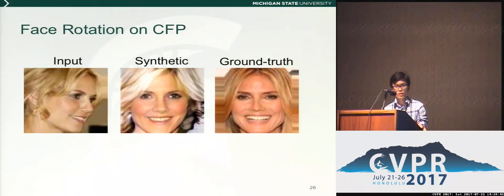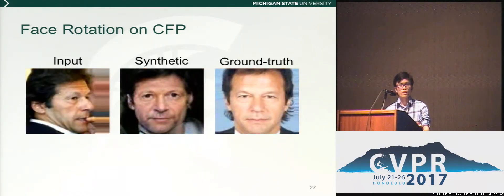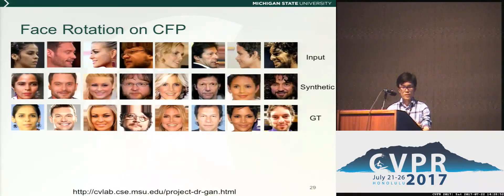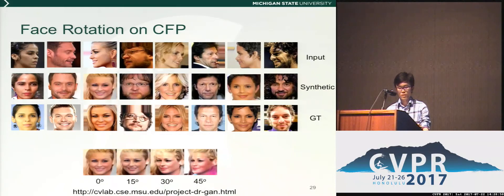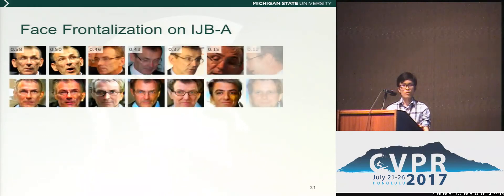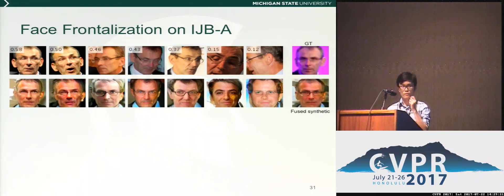We believe this is the first work that can successfully frontalise a face image with extreme rotation. Besides frontalisation, we can also synthesise face images in multiple poses. For a full comparison, you can access our project website. Here you can see the frontalisation results on the IJBA dataset. We show the input images in the first row and their frontalised versions in the second row. In the last column, we show the image from the fused feature, which aggregates information from all the input images.